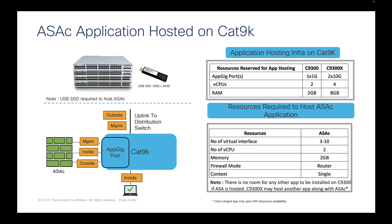As you see in this diagram, you will need to define a management interface for ASAc, the inside network interface, and the outside network interface. All these interfaces connect to AppGig port, so you will need trunk port configurations along these VLANs. One important thing is you will also need Cisco USB storage to securely store the applications and data.